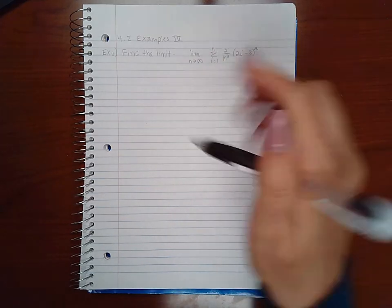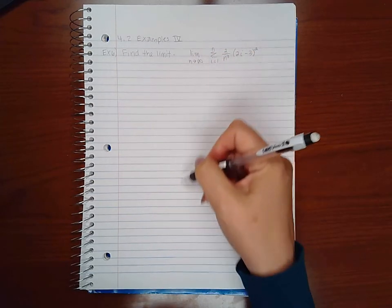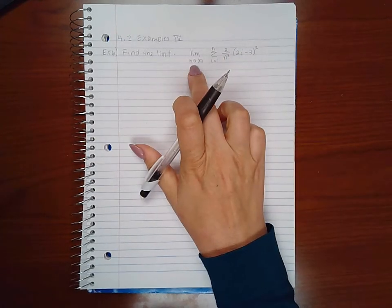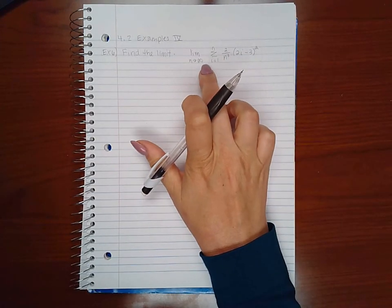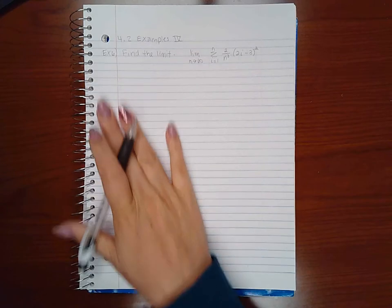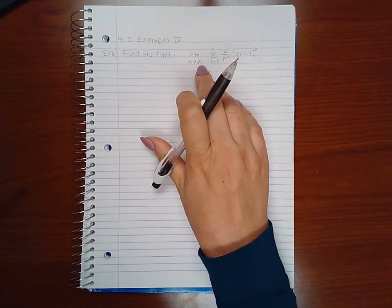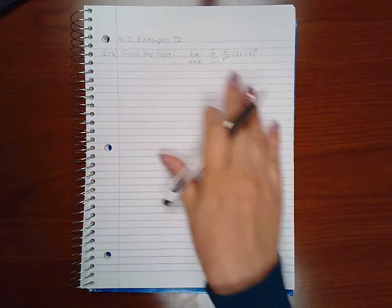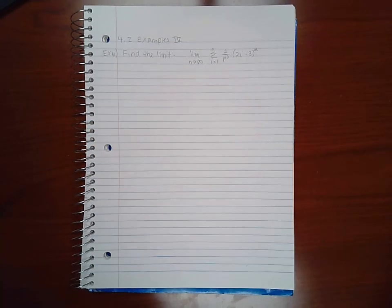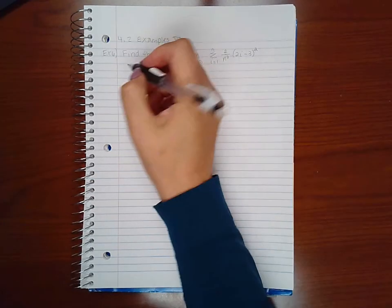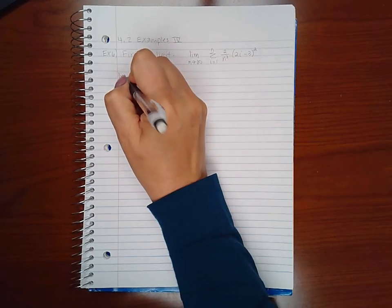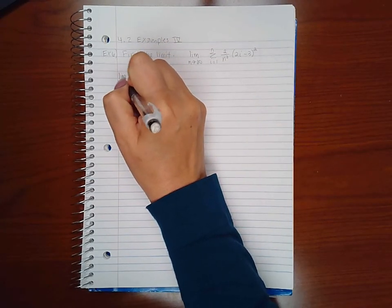So the first thing I want to do is simplify this sum. Every step I take simplifying the sum, I do still have to write LIM as n approaches infinity until I'm done and I actually find the limit. If I do not write LIM, then I need to specify that everything I'm doing is just my side work. But for me, I'm going to just be consistent and type LIM for everything.